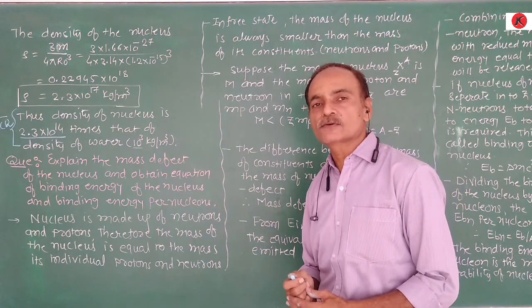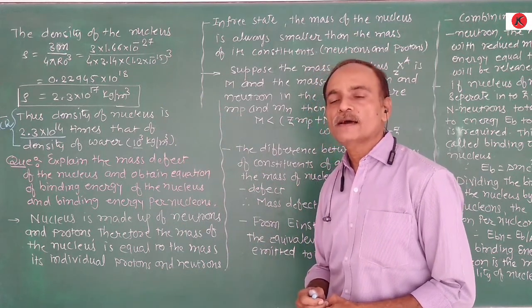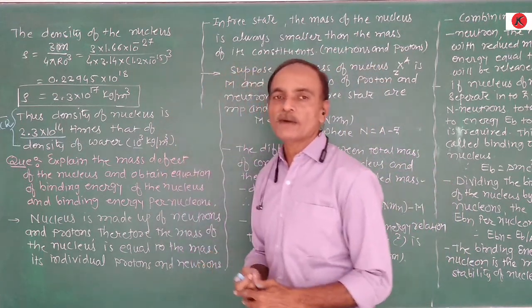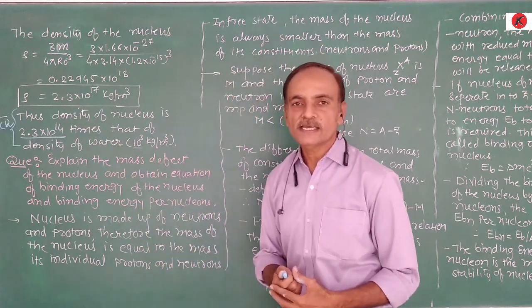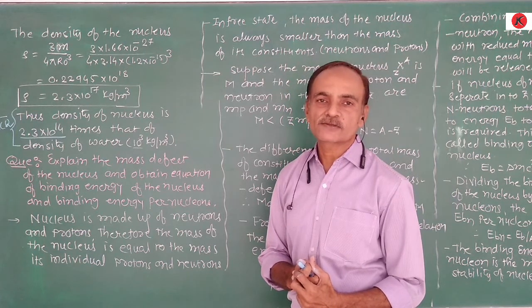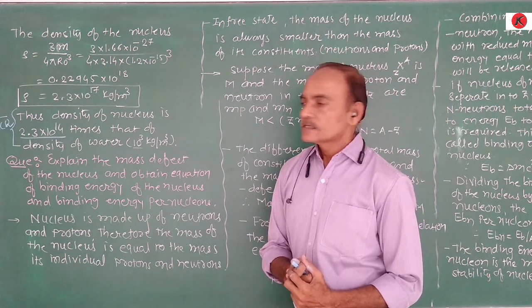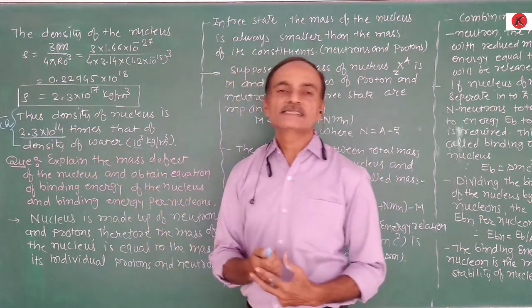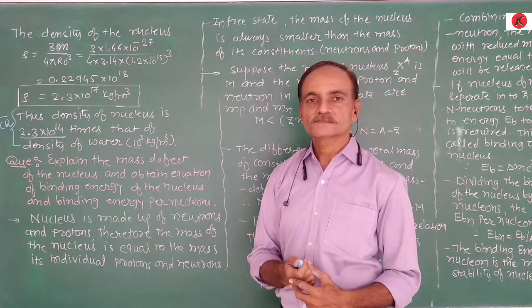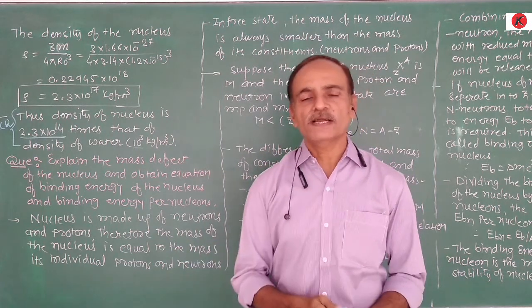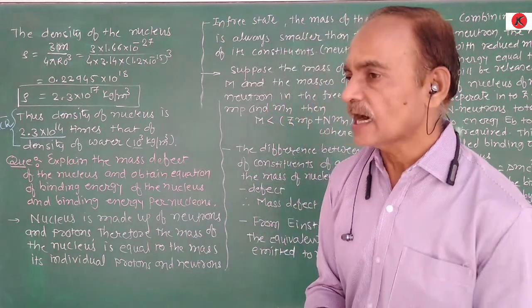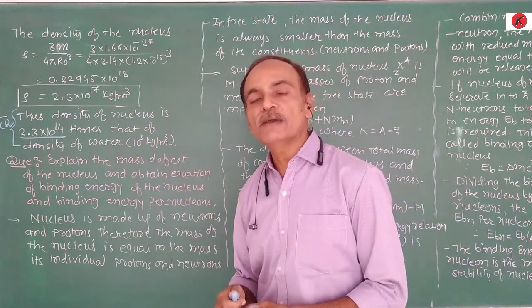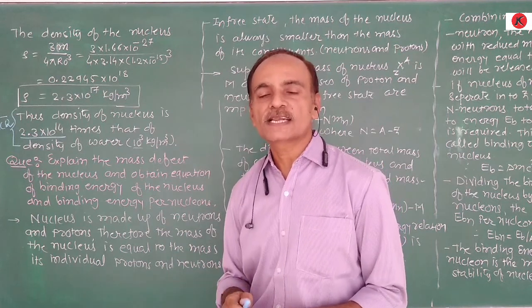Again, the equation ρ = 3m / (4π · R₀³). When we substitute the values of m, R₀, and π, we get the density as 2.3 × 10¹⁷ kg/m³. Thus the density of the nucleus is approximately 2.3 × 10¹⁴ times the density of water. This gives us the equation for the radius of the nucleus R = R₀ · A^(1/3), and the density comparison between the nucleus and water.